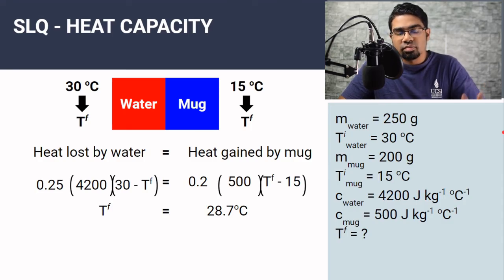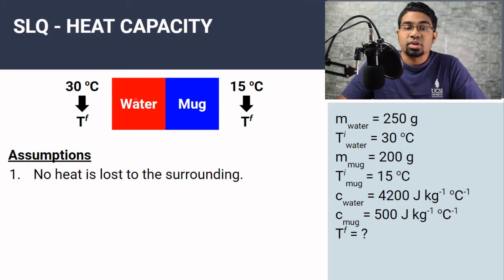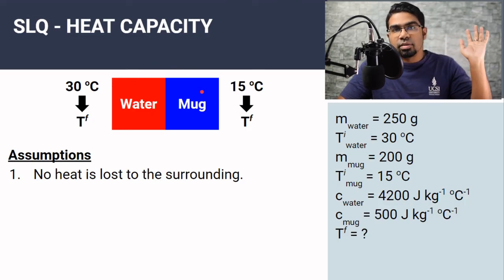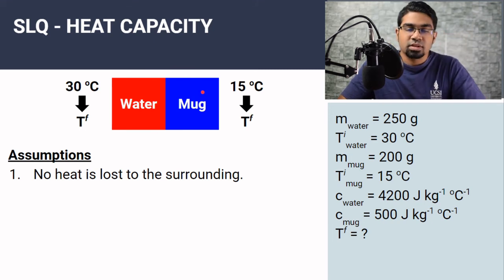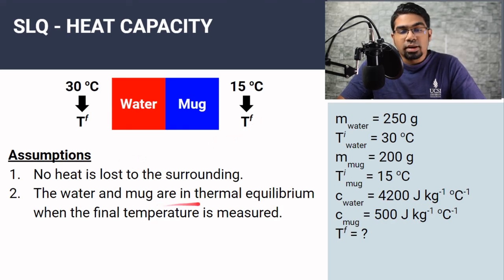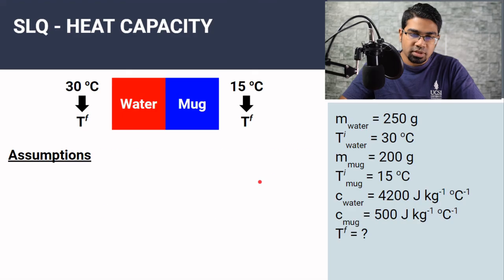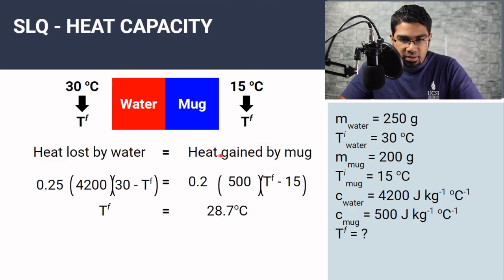When doing this question, there are two main assumptions we've made. The first is that no heat is lost to the surroundings — we assume all the heat from the water was transferred to the mug, none of it to the environment or the surrounding air. This is an ideal situation; in reality some heat will be lost, so the actual temperature change would be less. The second assumption is that the water and the mug are in thermal equilibrium when we measure the final temperature — otherwise this concept cannot be applied.